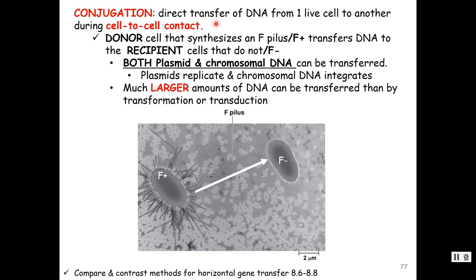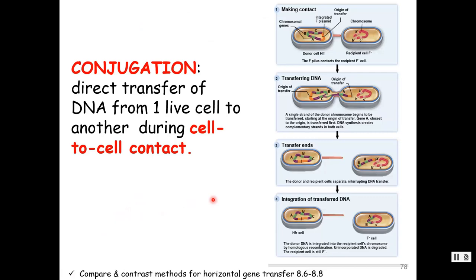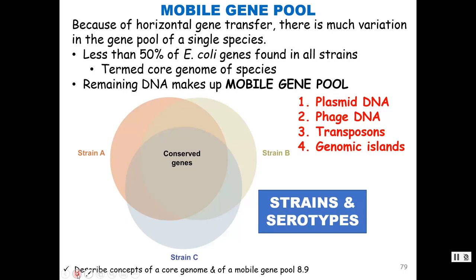The last mechanism is conjugation — direct gene transfer through cell-to-cell contact. The donor cell has an F pilus and is F positive; the recipient is F minus. After transfer of plasmid DNA (and possibly some chromosomal DNA), the recipient becomes F positive and can pass those genes to others. Conjugation can transfer much larger DNA than transformation or transduction — entire plasmids and even pieces of chromosomal DNA. Think of the 'C' in conjugation as cell-to-cell contact through an F pilus.